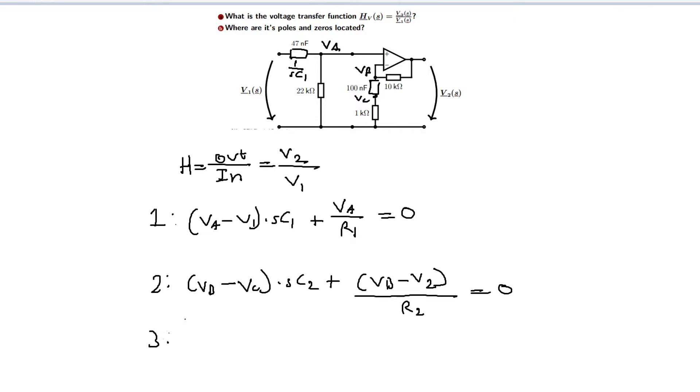This equals zero. The last node equation is for vc. We have current flowing through the last resistor r3 and current flowing through the capacitor, vc minus vb times sc2. This equals zero as well. So now we have three equations. Let's write these equations up in Maple and solve the system in there.